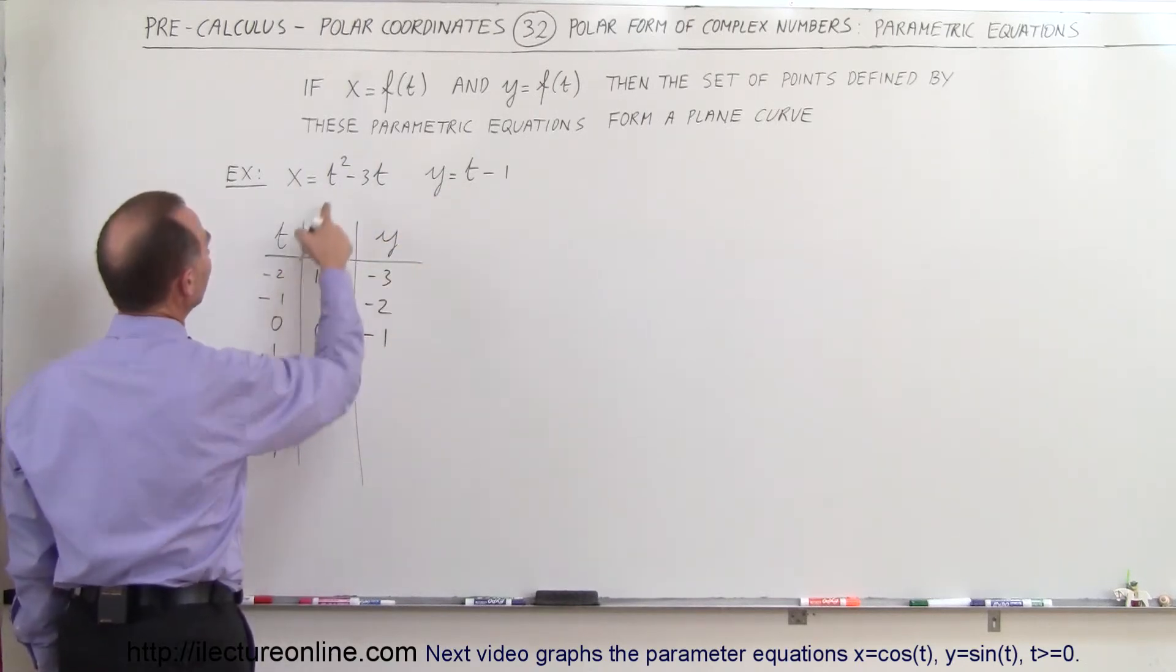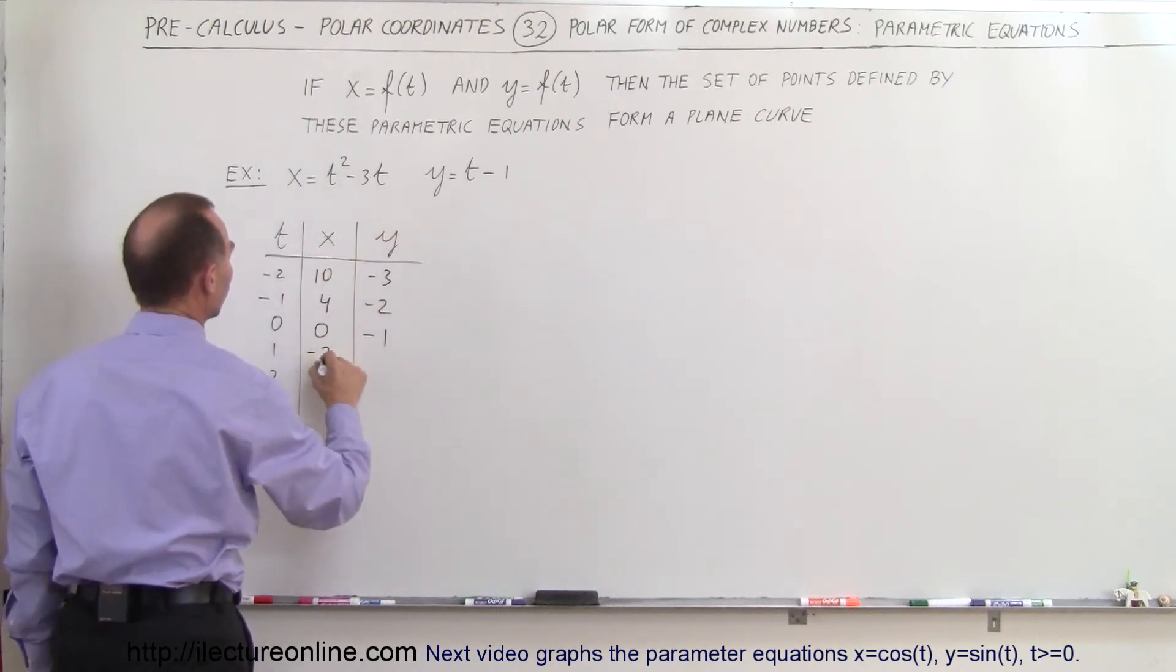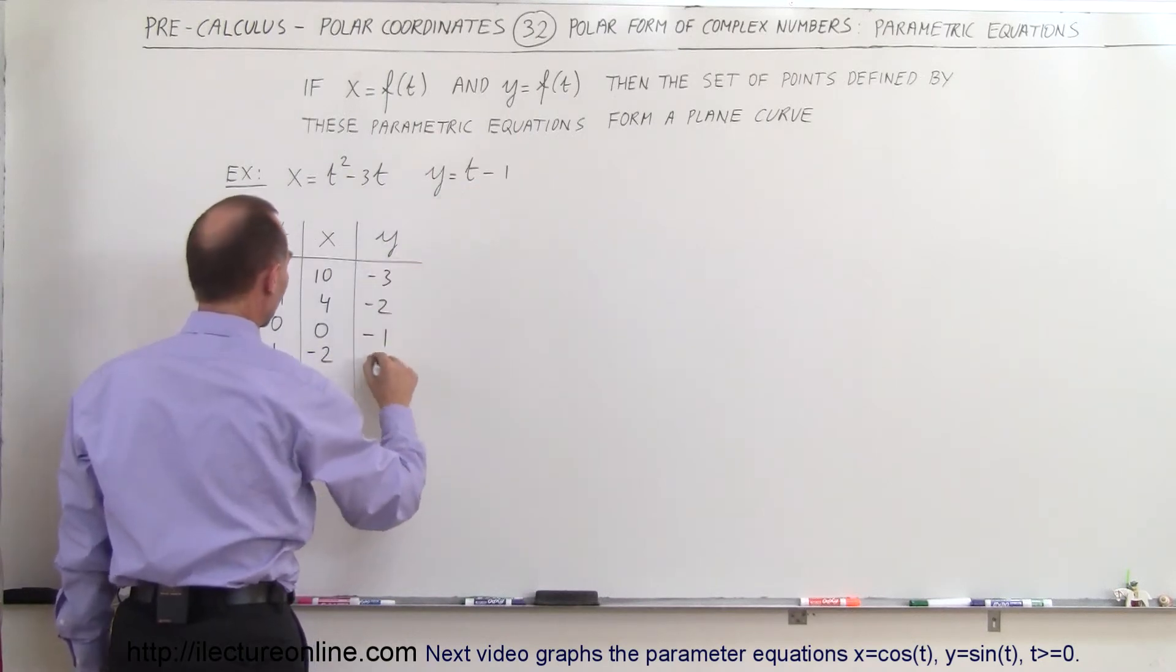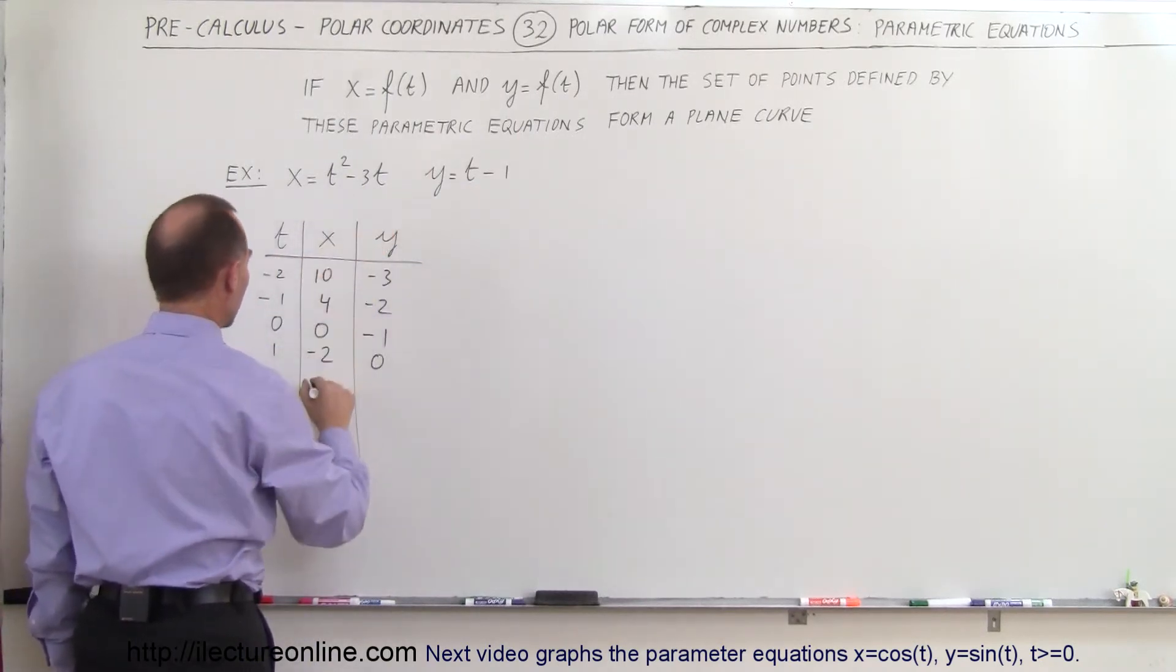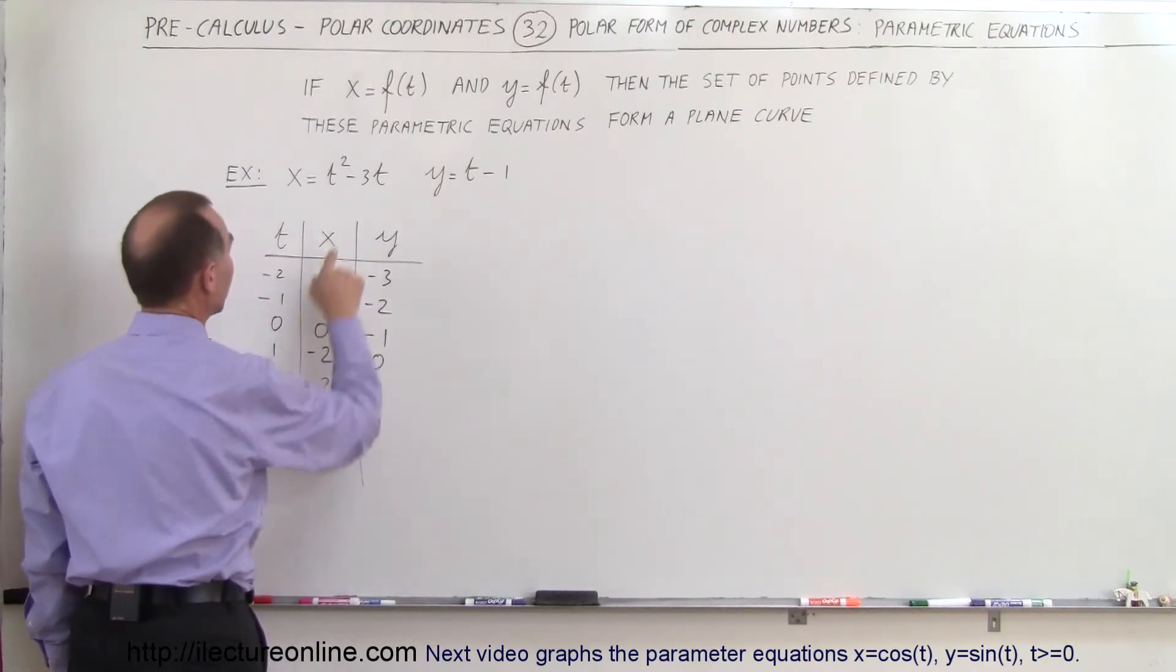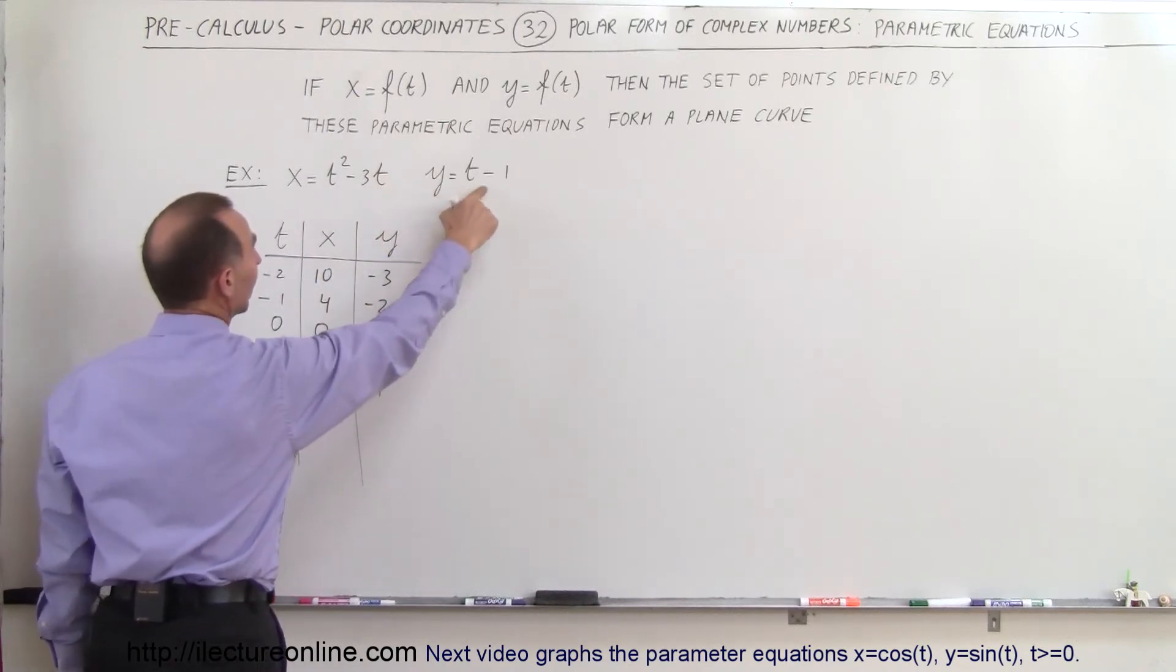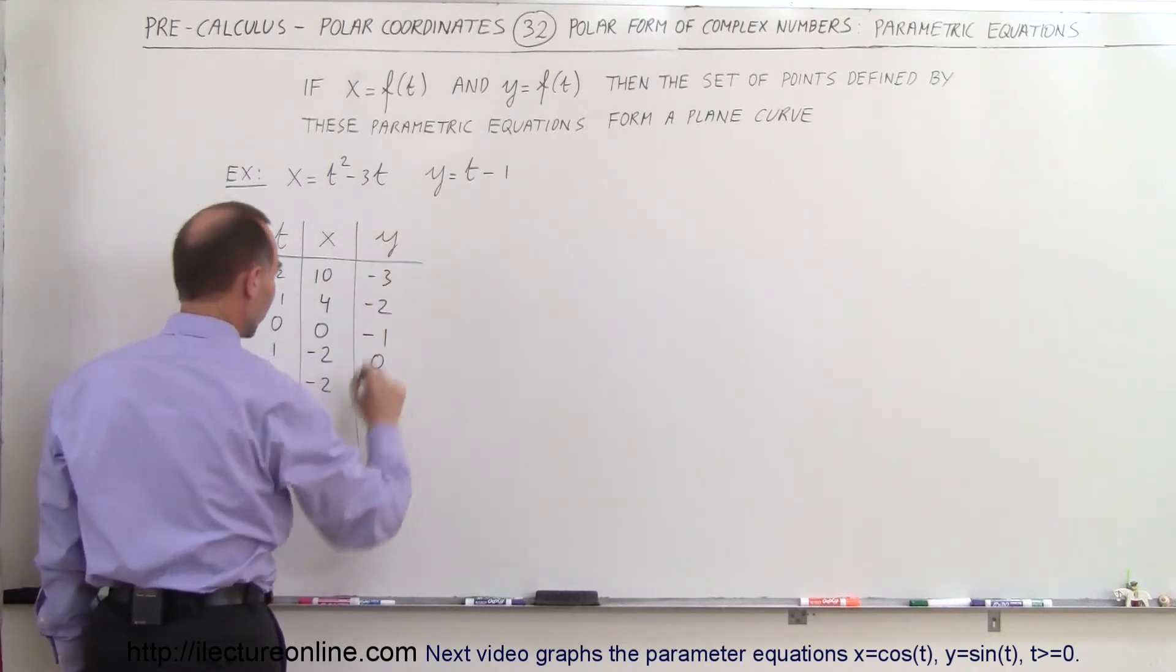When t equals 1, I get 1 minus 3, which would be -2. If t equals 1, I get 0. For t equals 2, I get 4 minus 6, that would be -2, and 2 minus 1 would be 1. For t equals 3, I get 9 minus 9, which is 0, and 3 minus 1, which is 2. And finally, 16 minus 12, which is 4, and 4 minus 1, which is 3.